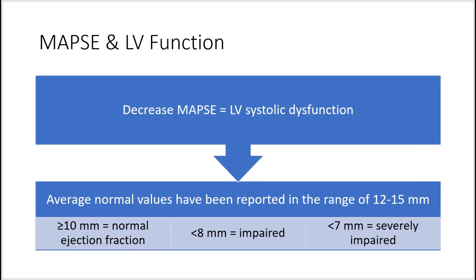Lastly, we'll talk about how MAPSE translates to approximate LV function. If there's a decreased MAPSE, then that means there's possible LV systolic dysfunction. Average normal values have been reported in the range of 12 to 15 millimeters, and if it is greater than or equal to 10 millimeters, it indicates normal ejection fraction.